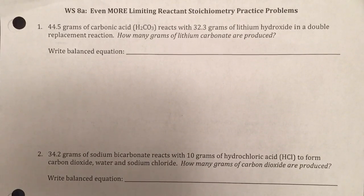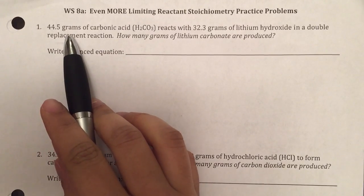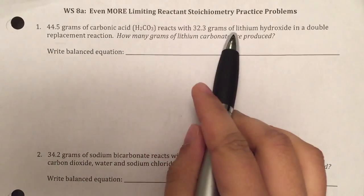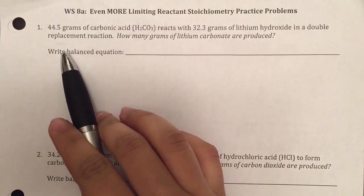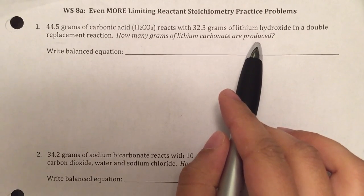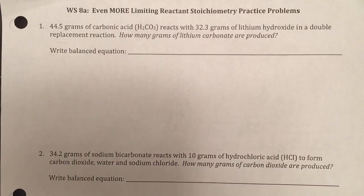Looking at sheet 8A, problem 1. Problem 1 says you have 44.5 grams of carbonic acid reacting with 32.3 grams of lithium hydroxide in a double replacement reaction. How many grams of lithium carbonate are produced? So the first thing it tells you to do is write your balanced equation.